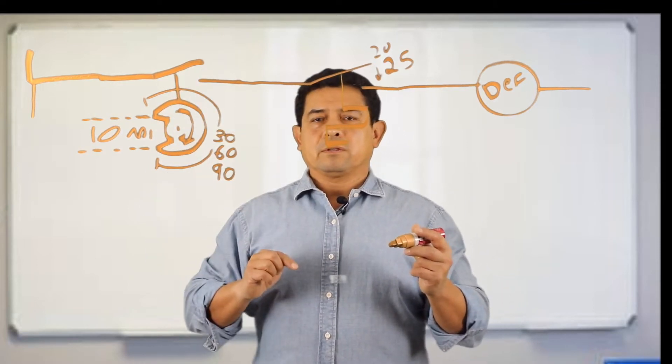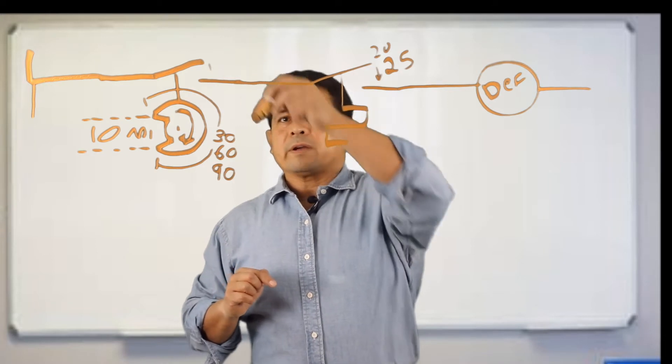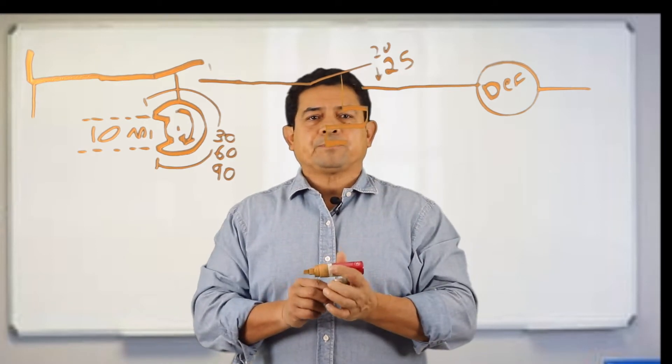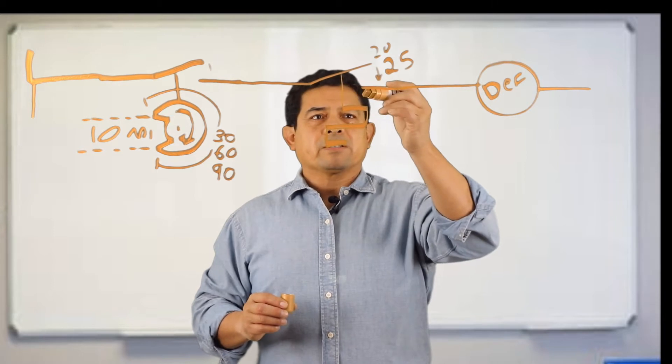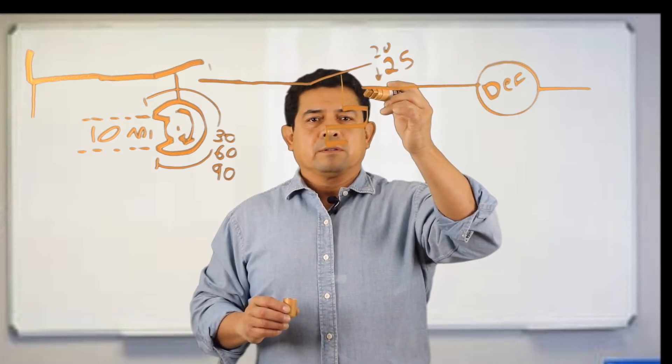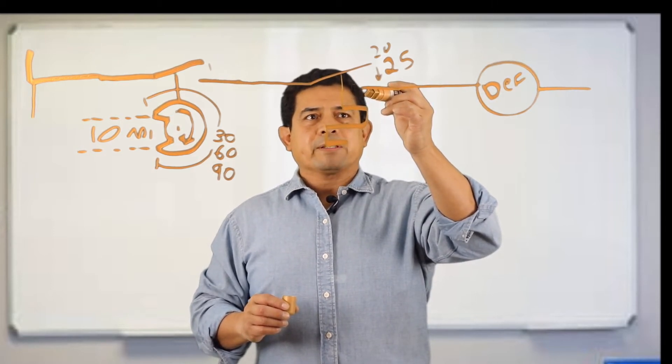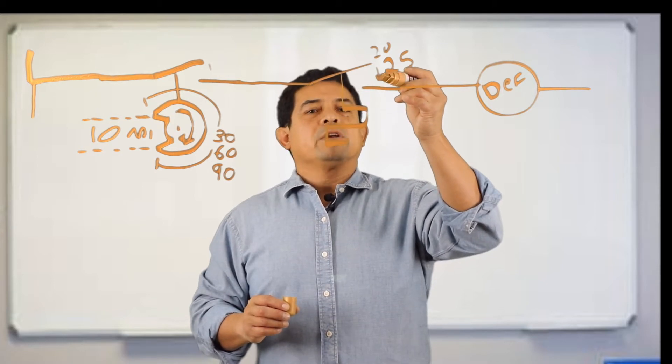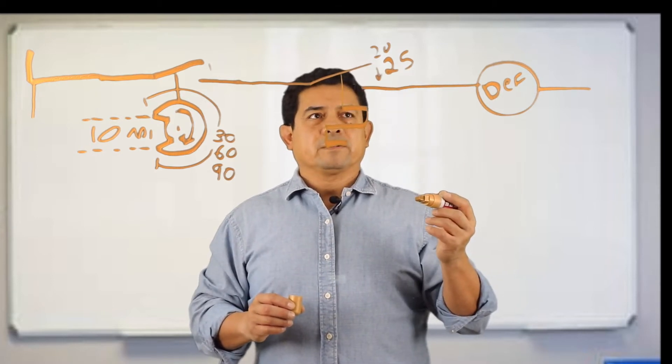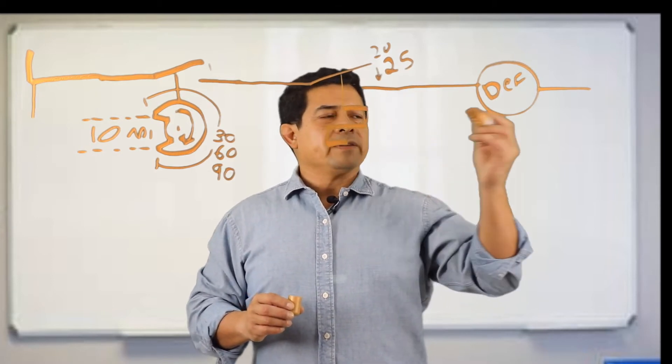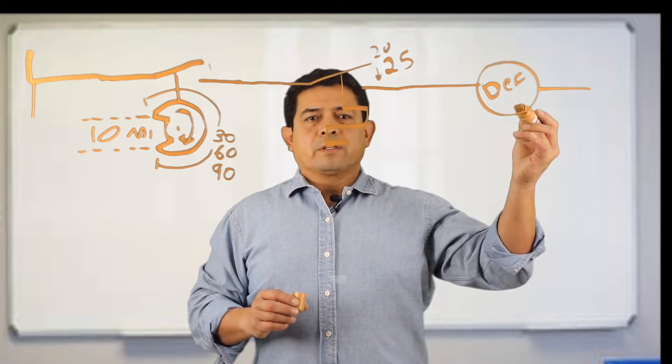Once these close, power is going to go through and stop right there. Power is not going to go through until the temperature drops below 25. Once it drops below 25, it sends power and goes into defrost.